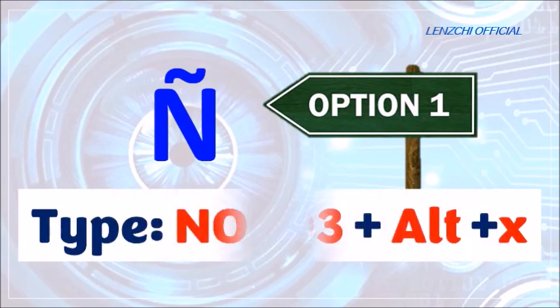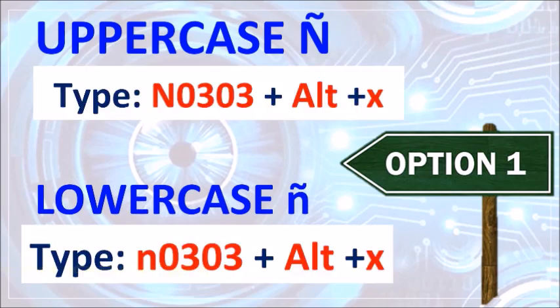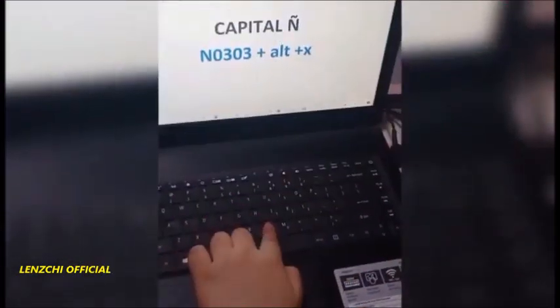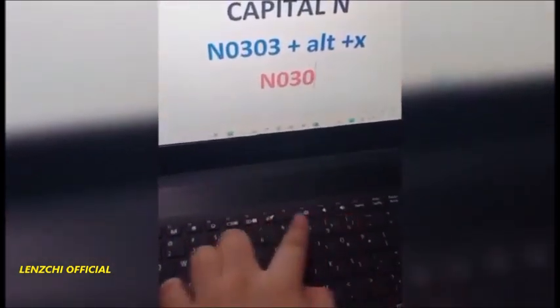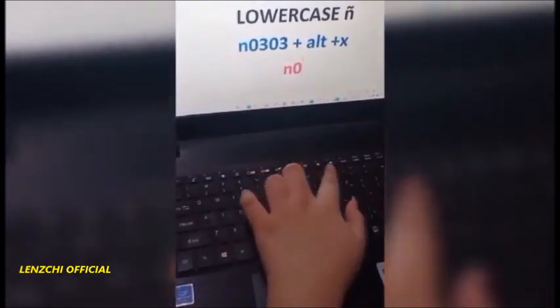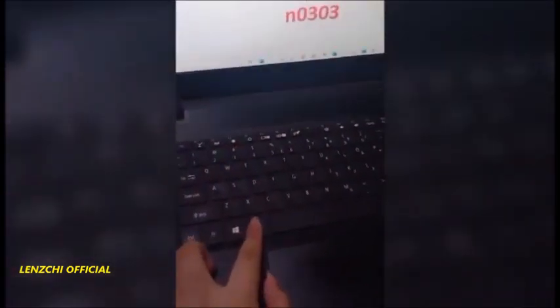First, type capital N and numbers 0303 on the document, then press Alt and X. To create an uppercase Ñ, type capital N and 0303, hold the Alt key, then press X. For the lowercase ñ, type small letter N and 0303, hold the Alt key, then press X.